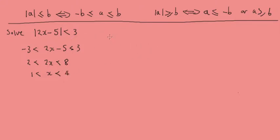Then dividing through by 2 gives us 1 is less than x is less than 4. Now let's look at the graph of this. We have y equals the modulus of 2x minus 5, and we also have y equals 3, and we plot these.